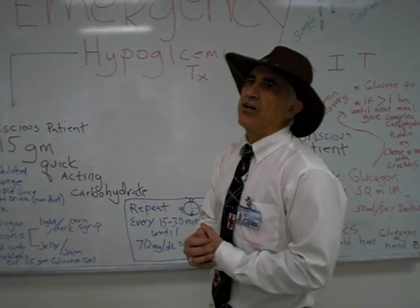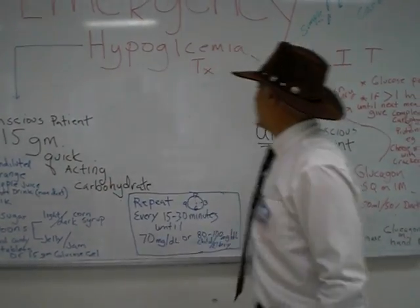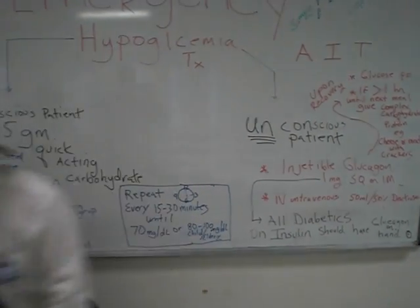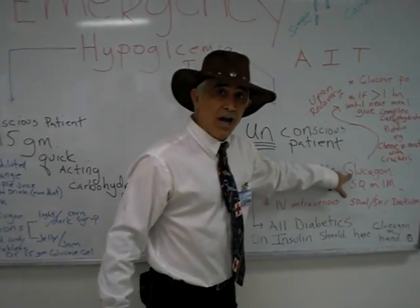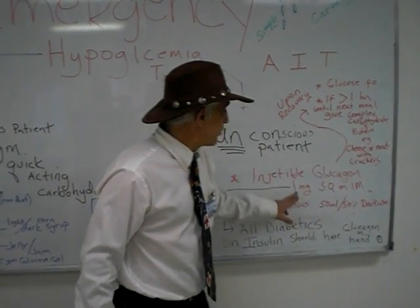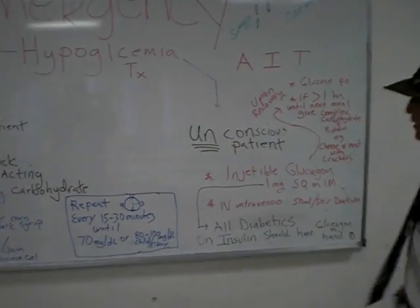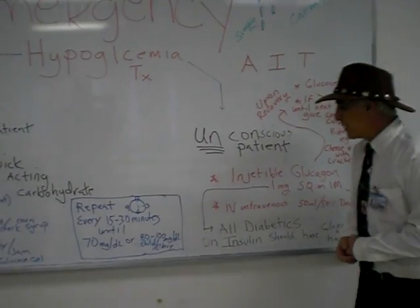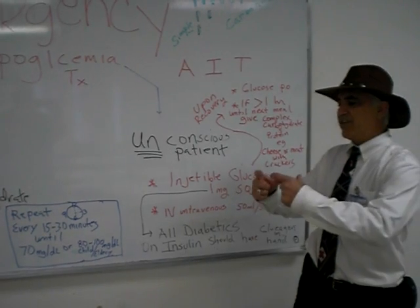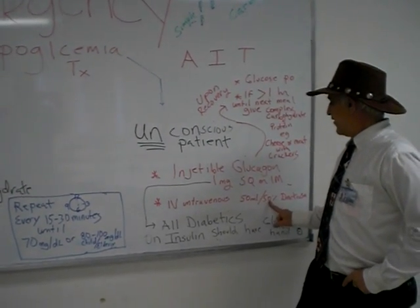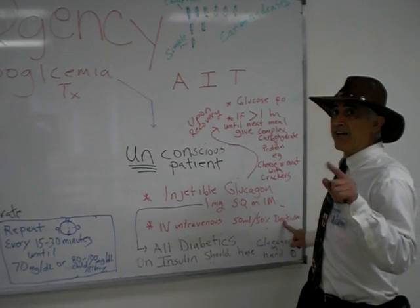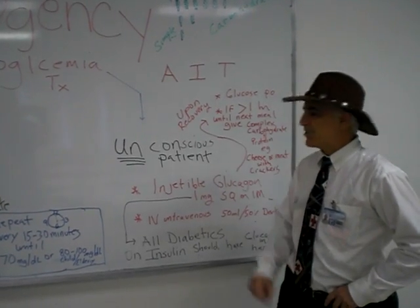What if our patient is unconscious? We cannot use the oral route. For the unconscious patient, we can use injectable glucagon — one milligram subcutaneously or intramuscularly. The RN or doctor can also administer intravenous dextrose, which comes in a 50-milliliter syringe at 50% strength. It is very effective and very quick.